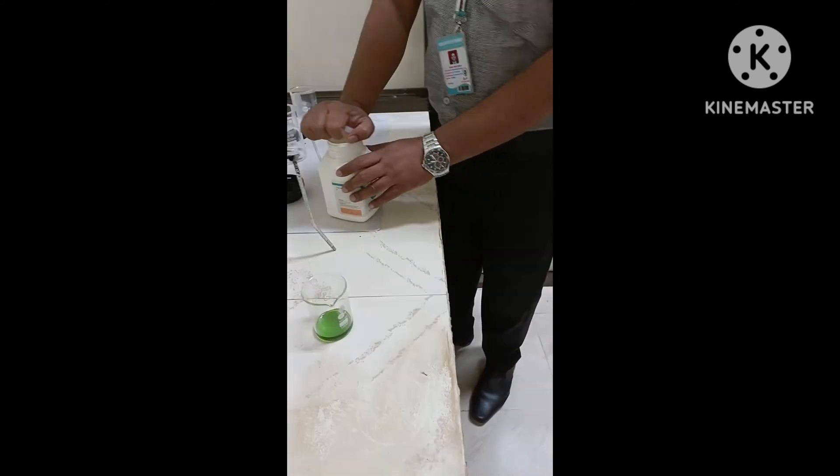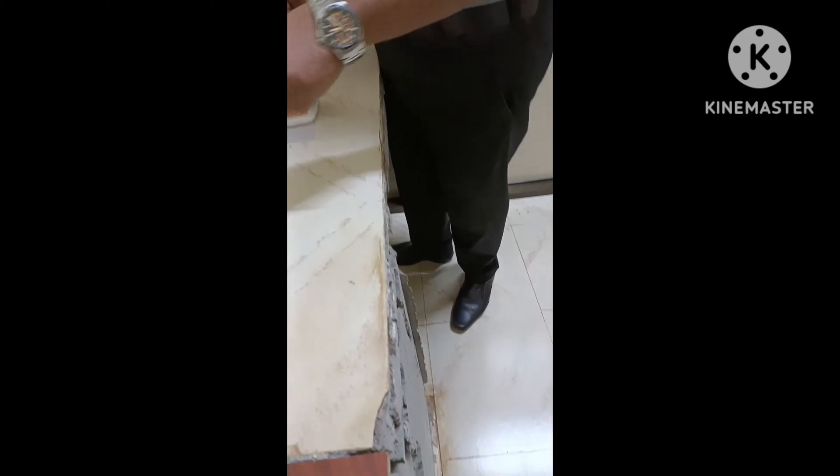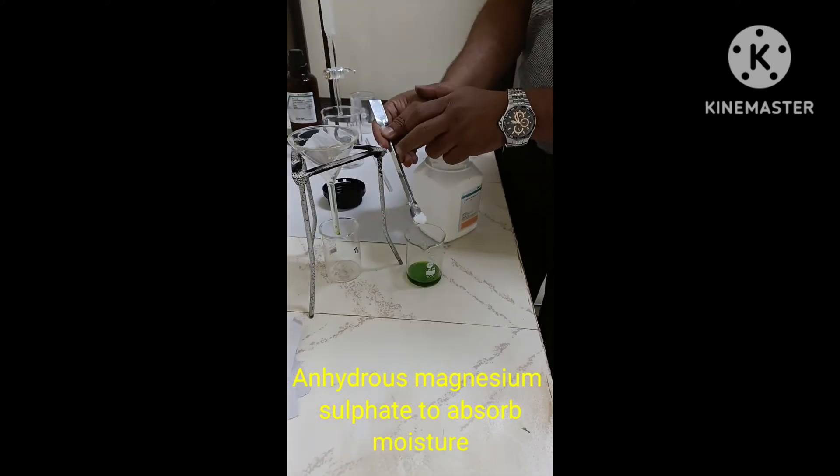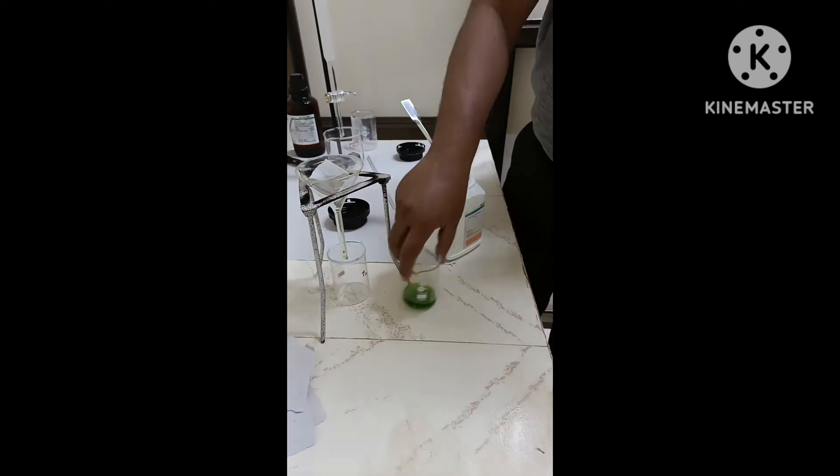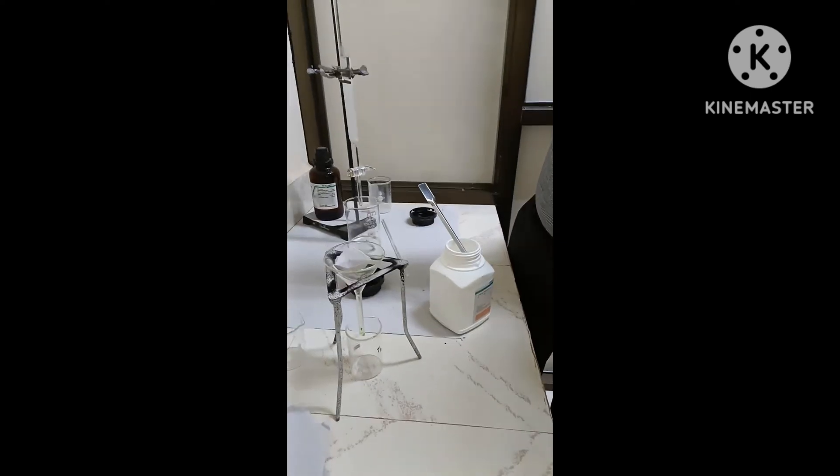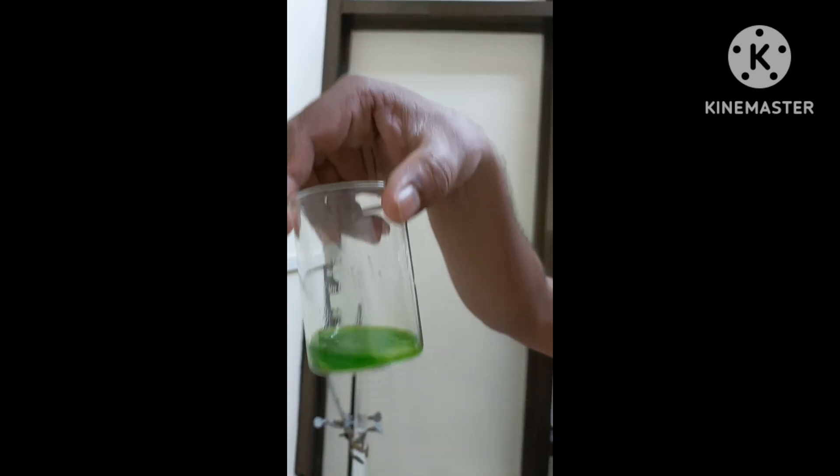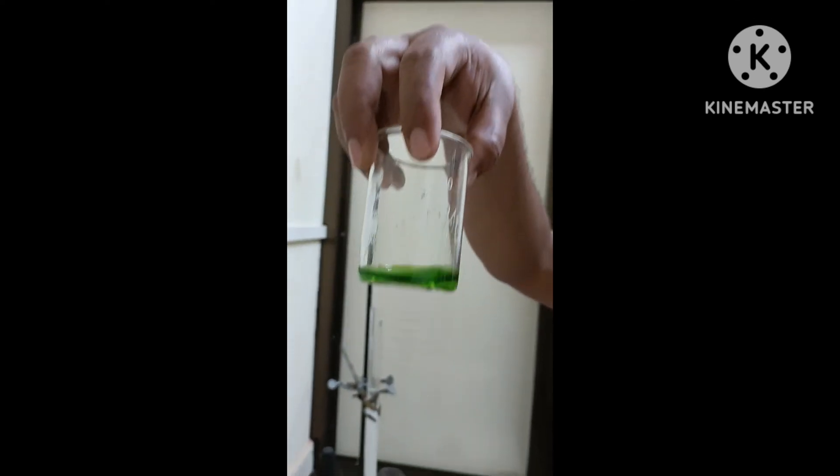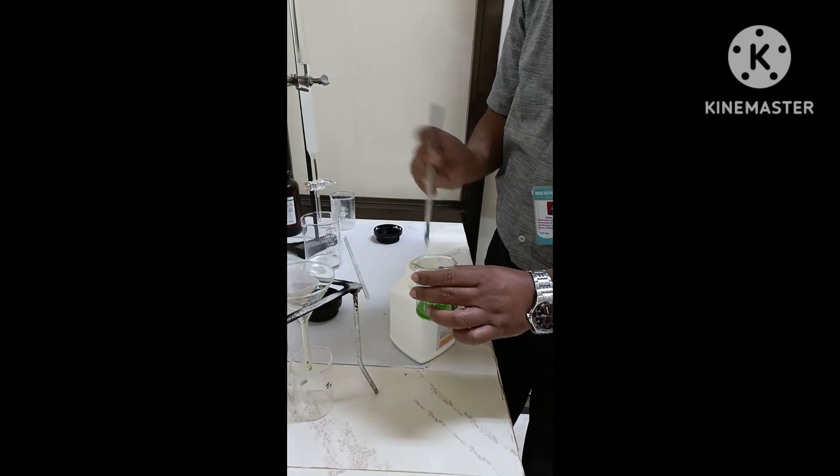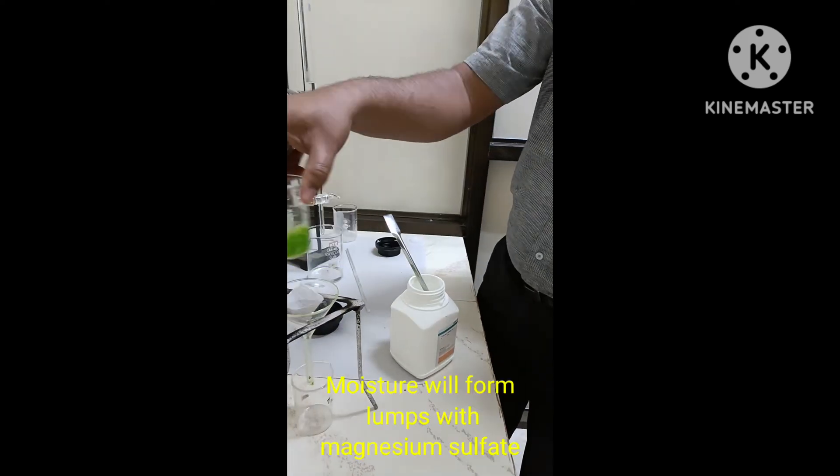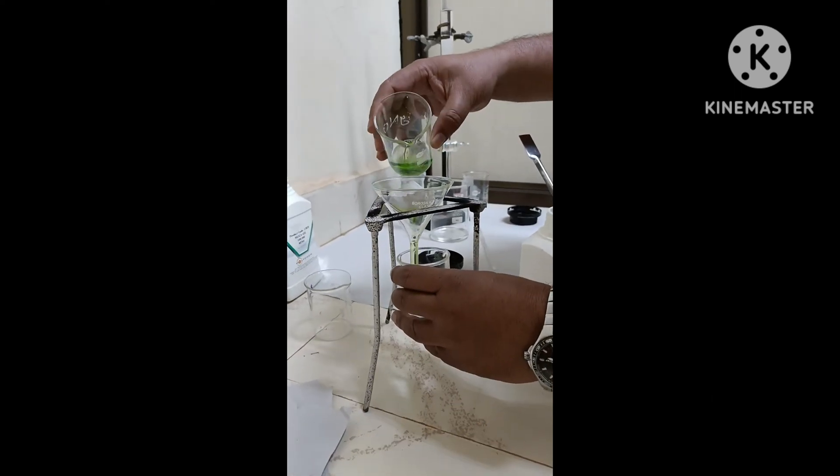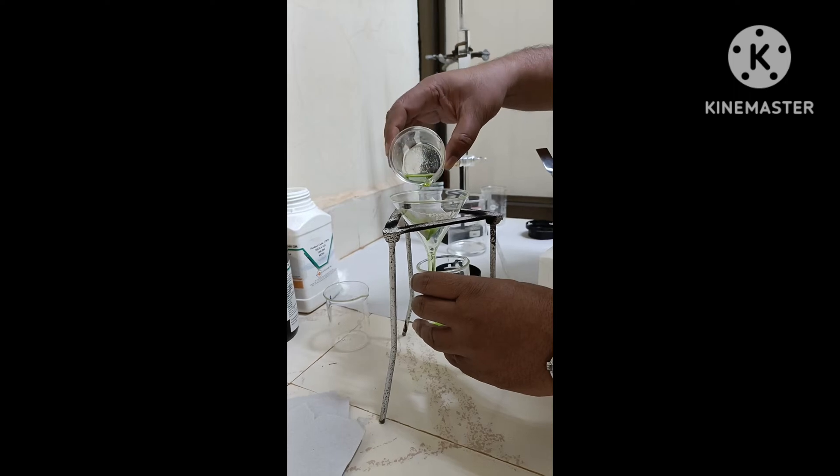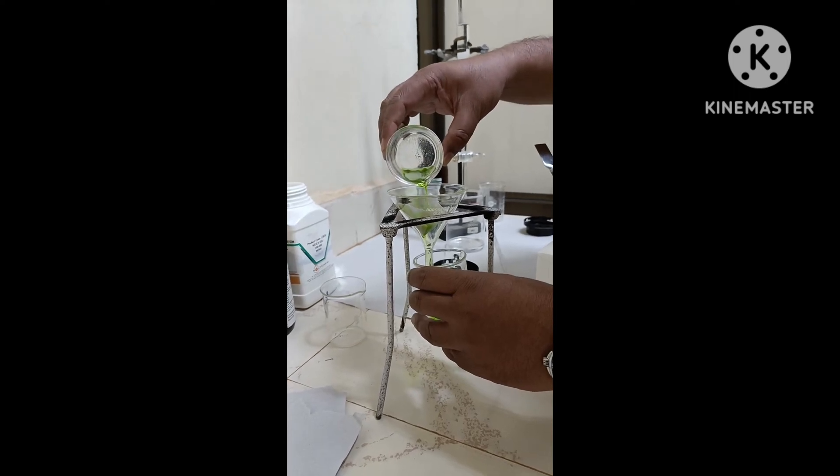Once we pack the column, next is we have to load the sample. Here our sample is the extract of spinach leaves. During the extraction, there is a possibility that it might have some moisture. To remove that moisture, what we are doing is adding magnesium sulfate, which is anhydrous. It will absorb the moisture and it will form lumps and then those we can filter out. What we will get is the pure extract and that we can load in the column.